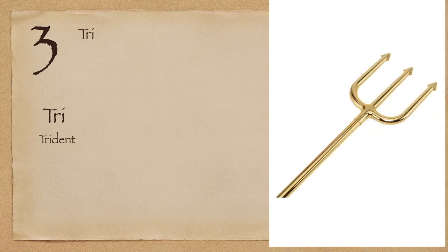So the first word is trident — a three-pronged spear, or a trishul. The image would be easier to understand than the definition alone.